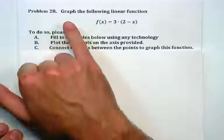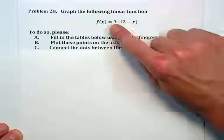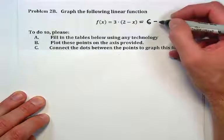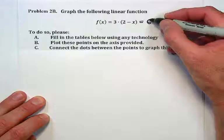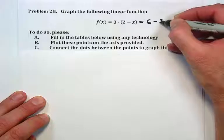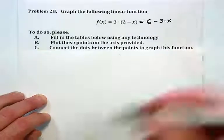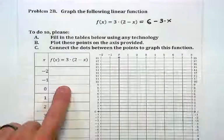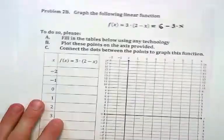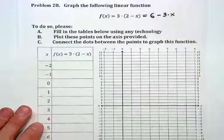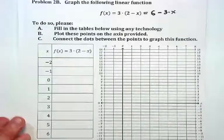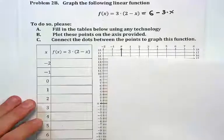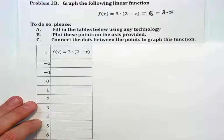Remember that the problem was to graph the following linear function: f(x) = 3(2 - x). We also knew from previous experience that this function could also be written as 6 - 3x. In this problem we're going to fill out the table using technology rather than doing it by hand. We will then plot the points that we generate in this table on the axis, and connect the dots between the points to create the graph.